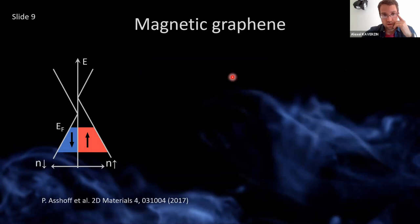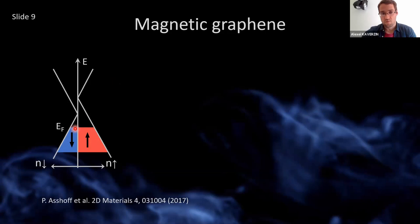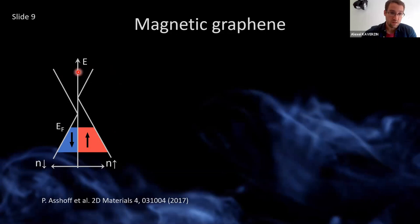Now let's see how it works for graphene — basically in exactly the same way. The band structure gets shifted for spin up with respect to spin down, and at a certain Fermi level we have more electrons with spin up than spin down. One of the main differences of graphene with respect to other metals is that it's a semi-metal, meaning the density of states is relatively small. We can quite effectively tune the position of the Fermi level across the Dirac point. And when we bring it above the Dirac point, the polarization changes sign.